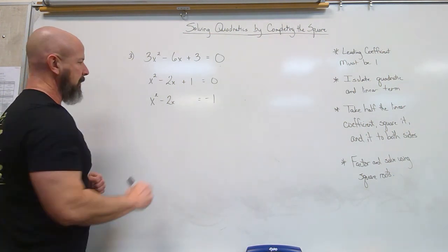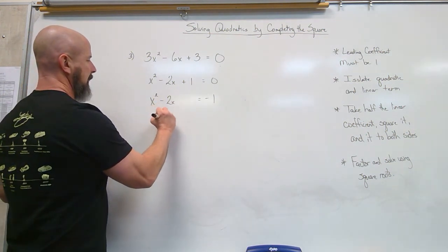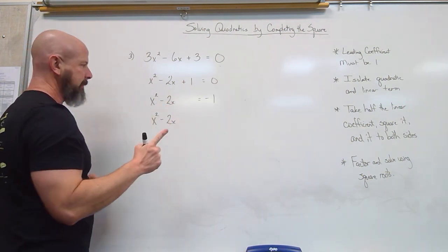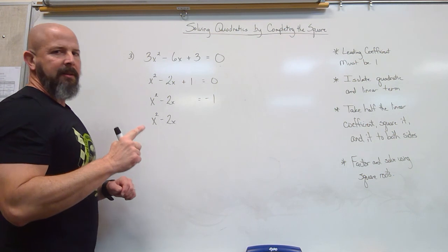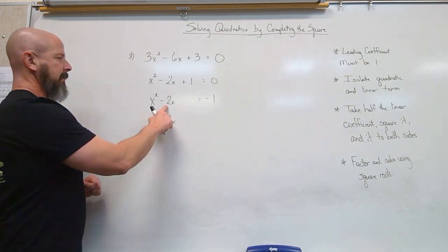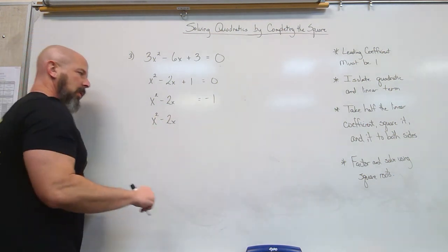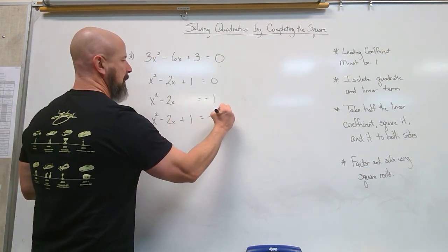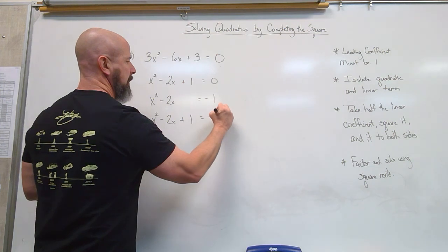And now we're completing the square process. x² minus 2x. All right, so we take half the linear. Half of 2 is 1. Remember, it doesn't matter if it's positive or negative because we're squaring it. So half of 2 is 1. 1 squared is 1. And then add that 1 to both sides.